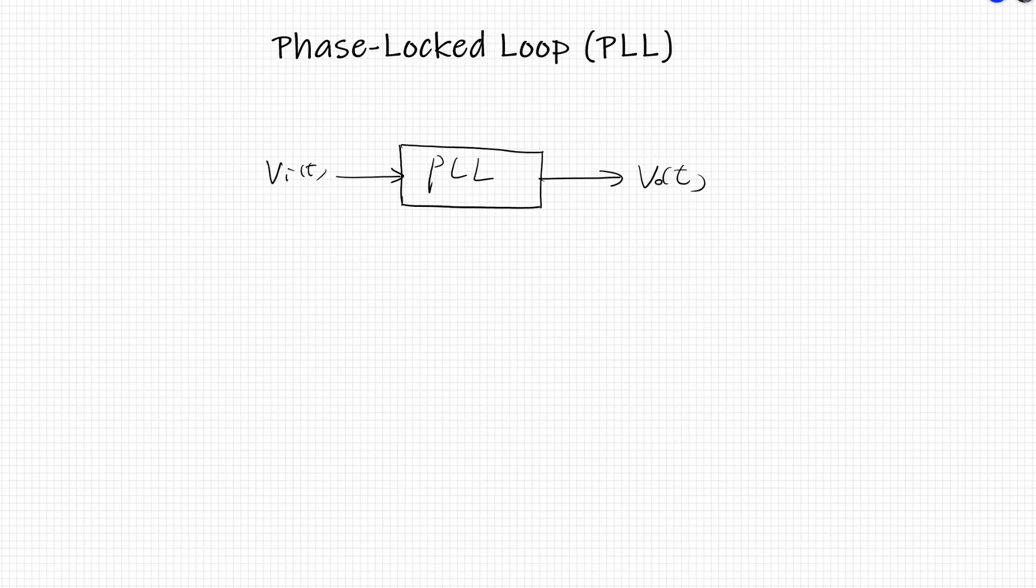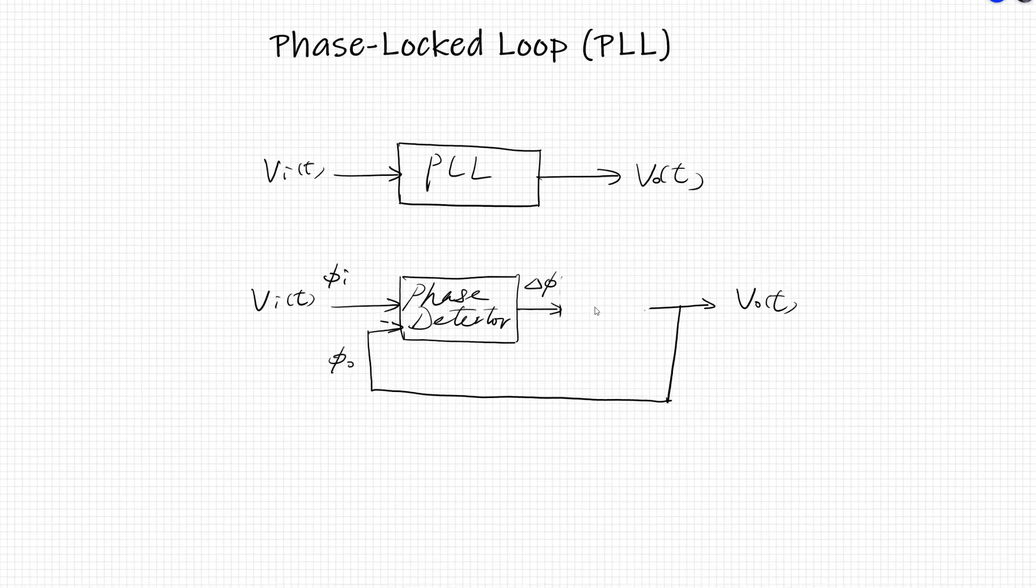PLL is the module that locks the phase of the output to the input. PLL is a feedback system that detects the phase error between the input and the output. We call that a negative feedback because this is the difference between two phases, delta phi. Delta phi becomes the input to a voltage controlled oscillator, VCO, that adjusts the phase of output signal.